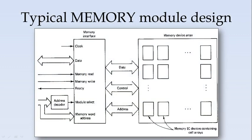So this is the typical memory module design. Here this is the memory interface and this is the memory device array. It can have different modules where the memory IC devices containing cell arrays will be there. To interface, what are the things that we need is address bus to differentiate different address locations, and the data bus for taking the data, reading the data and also for writing the data, and the control bus for controlling the operation whether it is a read or write.